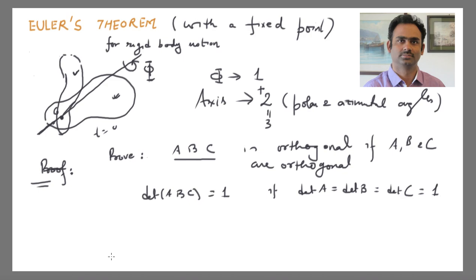If I want to prove Euler's theorem, I should prove that there is one line which will remain unchanged under the transformation — that line will be the axis of rotation. Equivalently, I should be able to find a plane in the rigid body such that all the points in that plane will still remain in the same plane after the transformation, and clearly that plane is perpendicular to the axis of rotation.